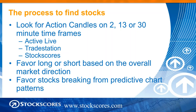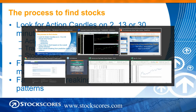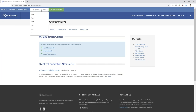The process is: look for action candles on either the 2, 13, or 30-minute time frame. You can do that with ActiveLive — that's the simplest. You can do it with TradeStation for independence. Each day when day trading, we want to favor long or short based on overall market direction, and favor stocks breaking from predictive chart patterns. Let me jump into the Stock Scores market scan tool to show how to look for 30-minute swing patterns. I'll pull up MBRX and change the chart from daily to a 30-minute intraday chart with 10 days of data.